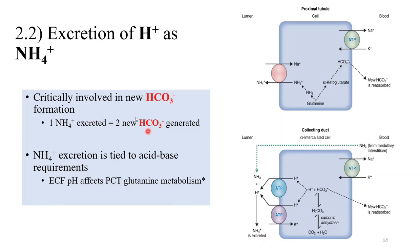One obvious benefit of using this buffer system is that it produces more new bicarbonate ions. Number two, this whole system is tied to acid-base requirements. When you have acidosis — an acidic change in the ECF fluids — the enzymes which affect glutamine metabolism get activated by the acidity of the ECF. More glutamine than normal starts to be broken down so that more ammonia can be made, more titration, more ammonium, and very crucially more new bicarbonate.